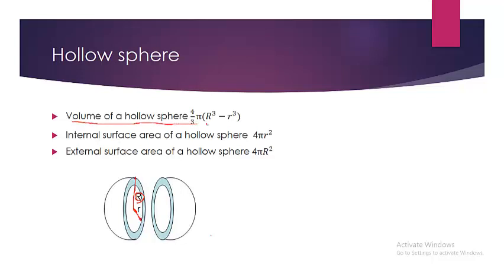The volume of the hollow sphere is 4/3 π R³ minus r³. This is because the big solid sphere has volume 4/3 π R³, and out of that we scoop out a smaller solid sphere with radius small r, which is minus 4/3 π r³. Taking 4/3 π as common, we get 4/3 π (R³ − r³). So, the volume of a hollow sphere is equal to 4/3 π (R³ − r³).